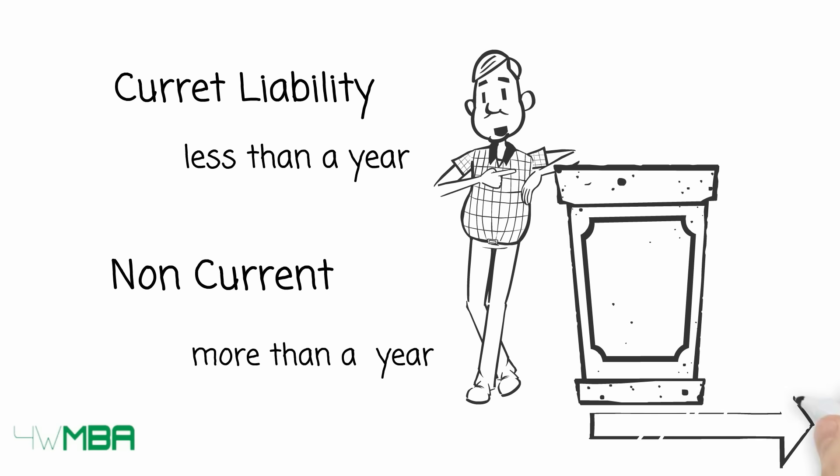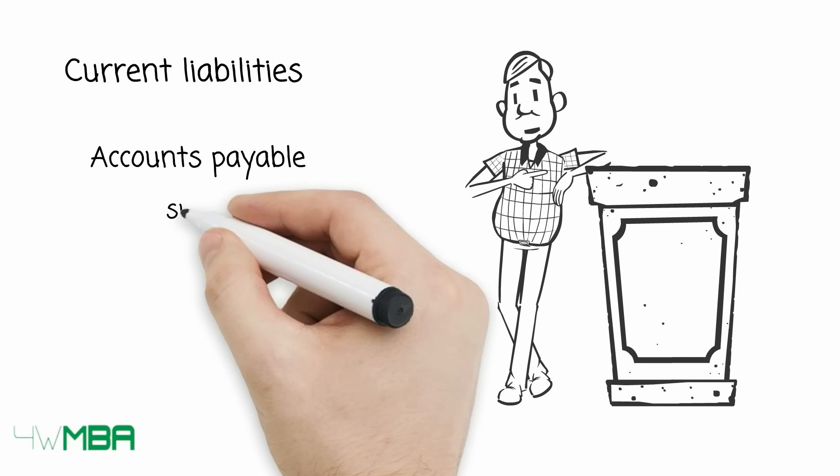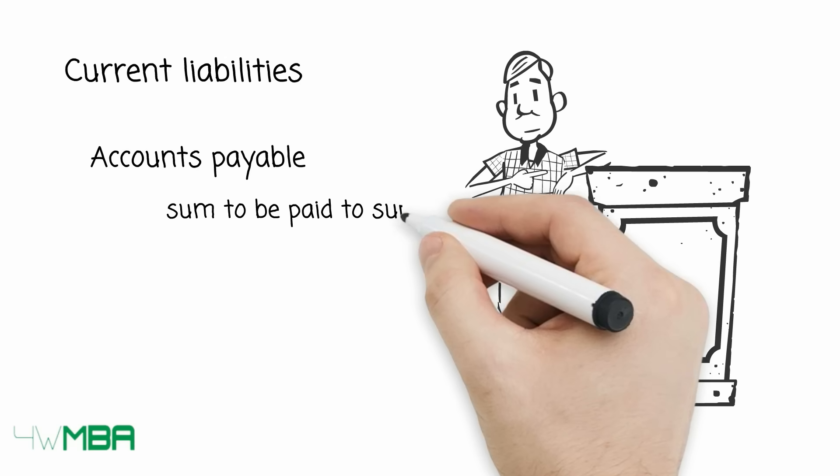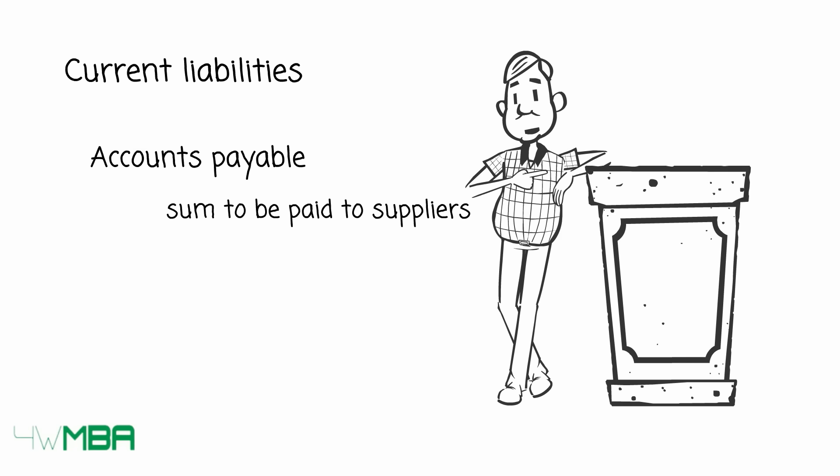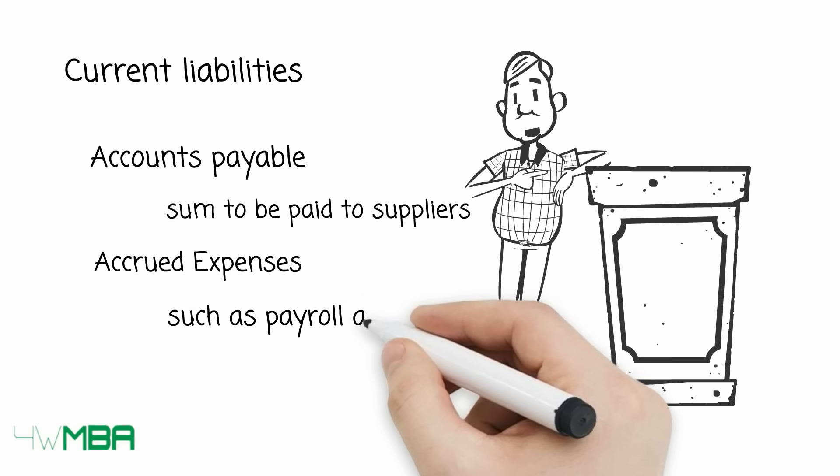Let's see the main current liabilities. Accounts payable is the sum of money not yet paid to suppliers that will be washed away once paid. Accrued expenses are sums of money to be paid in the future, such as payrolls or tax.